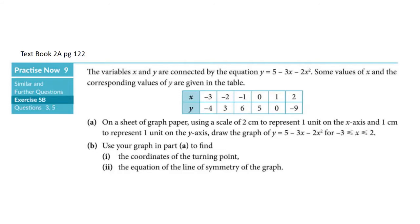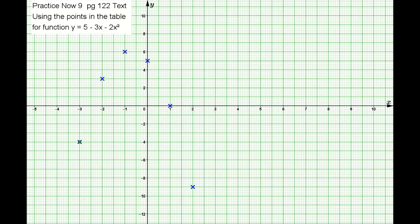For this video, I'm using a simulated digital version. I want to concentrate more on explaining to you how, when you finish plotting the points, you're going to draw or trace out the curve when the points are not symmetrical, using the points in the table for the function y equals 5 minus 3x minus 2x squared.